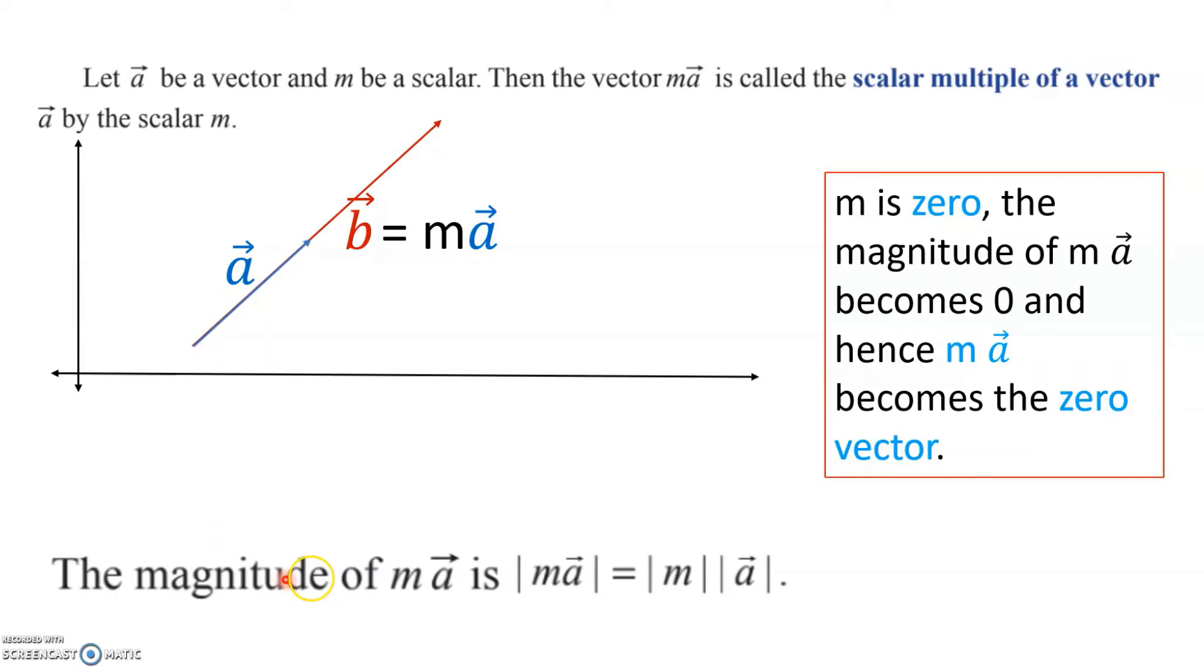To find the magnitude of m·a, you have to just multiply the mod of m with the magnitude of a. This will give you the magnitude of m·a.